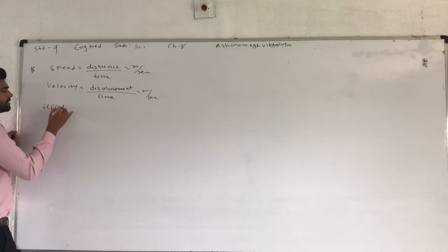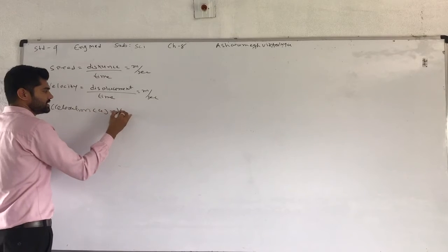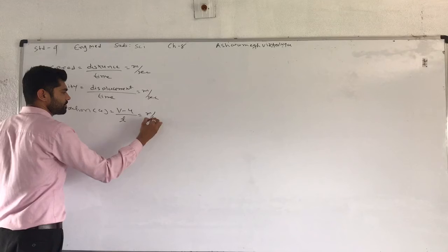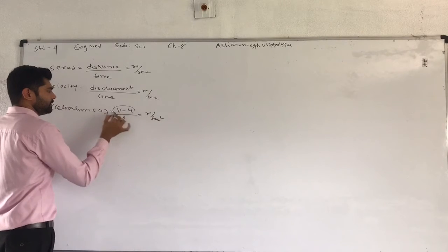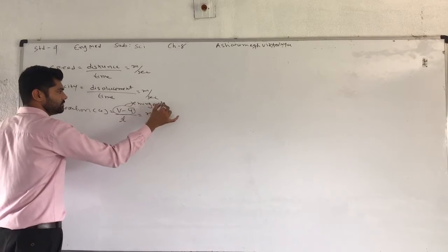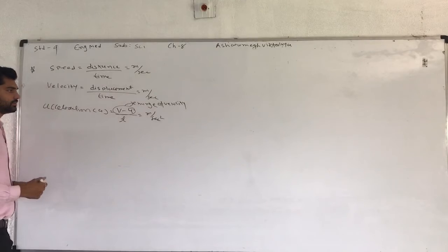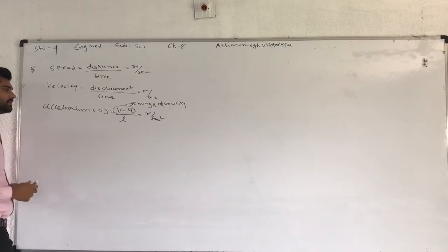Now we want video generated acceleration A, change of velocity divided by time. It means change of velocity is called meter per second square acceleration.